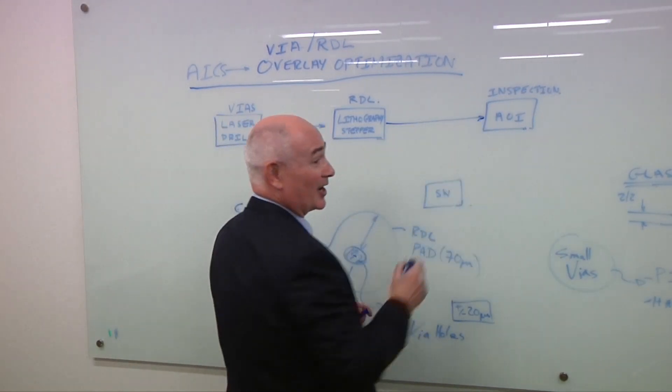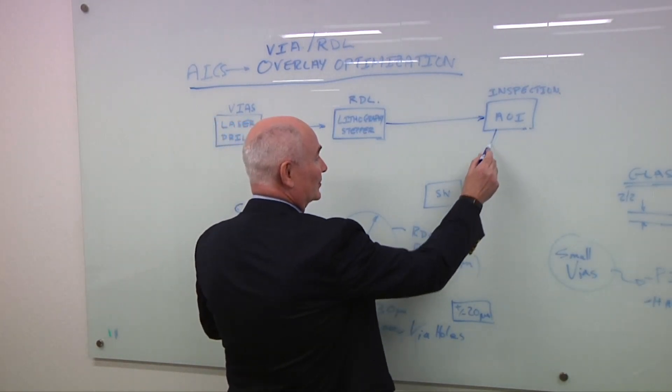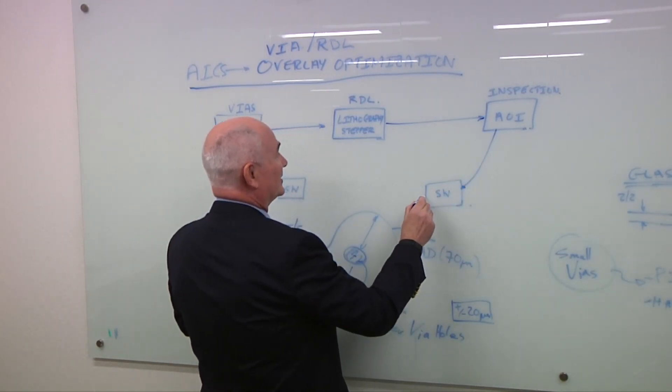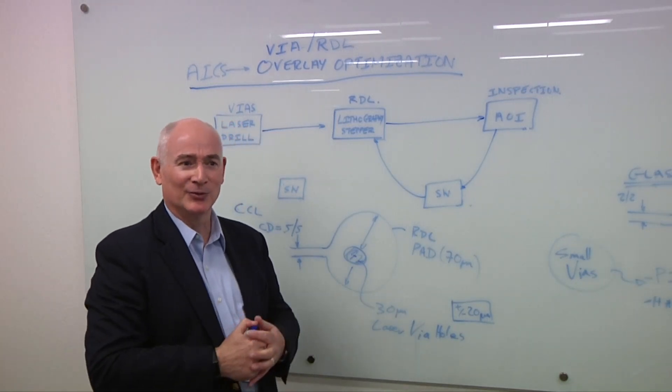Now, when you get to the AOI, you're going to try and measure the overlay. And of course, then you're going to have some information, which you'll send back to some software. And you may send this back to the stepper, what we would call a feedback, or in the old days, what was called an APC.